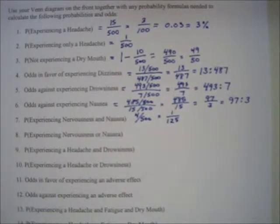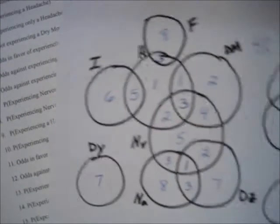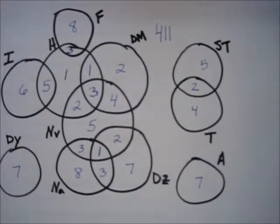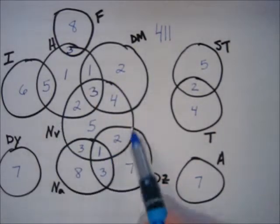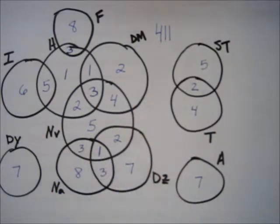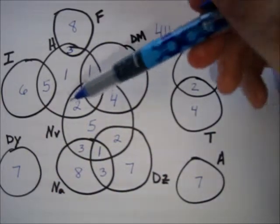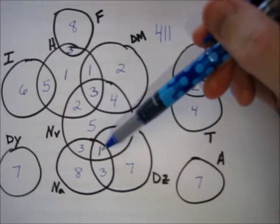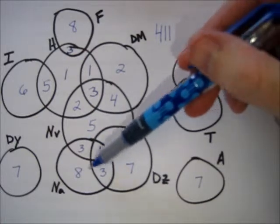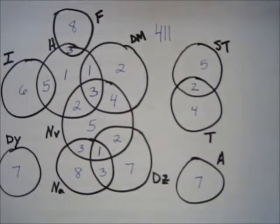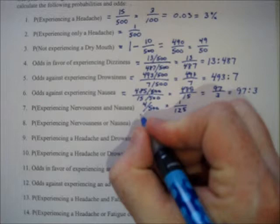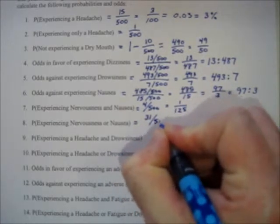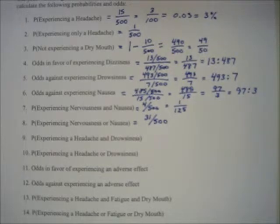Problem 8: probability of experiencing nervousness or nausea. Now we're looking for anyone in either circle. Add all of the nervousness circle and all of the nausea circle, making sure not to count things twice: 2 plus 3 plus 4 is 9, plus 5 more is 14, 15, 20, 31. So 31 people experienced one or the other — that's 31 out of 500, which will not reduce.